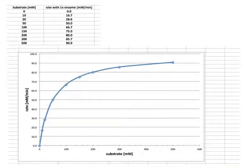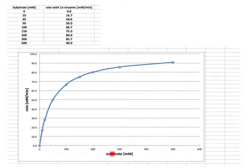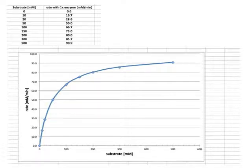Did you get the graph? It should really look like this — a typical saturation curve. Make sure you labeled your axes properly. On the y-axis you have the rate, and it's very important to include the units, which would be millimolar per minute. On the x-axis you have substrate concentration in millimolar. A graph without the right units and axis labels is not worth showing — that's absolutely important.